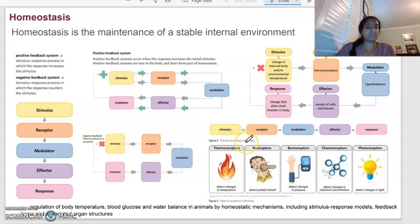In terms of the stimulus response models, there's different types of receptors that can detect that change. So thermoreceptors, they're things that can detect the temperature. Nociceptors, they detect painful stimuli. Baroreceptors, they detect changes in pressure. Chemoreceptors, chemical concentration, and photoreceptors will be changes in light.